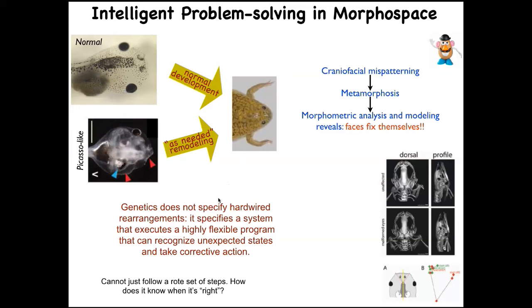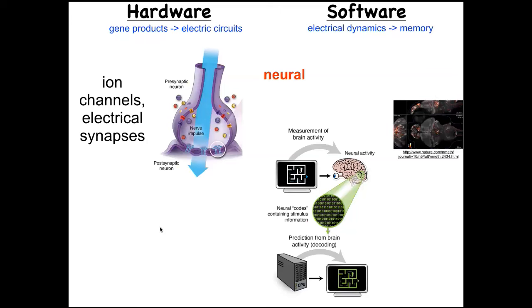Sometimes they go a little too far and have to come back, but eventually they stop. What genetics actually gives us is not hardwired rearrangements but a system of error minimization — a system that functionally has a set point, measures error toward that set point, and keeps changing until the error is within acceptable tolerances. That raises a clear question: how does it know when it's reached the right thing? This is anatomical homeostasis.